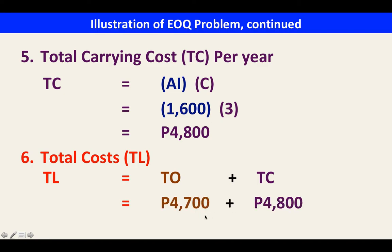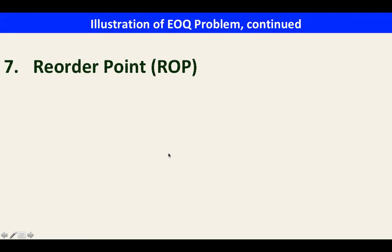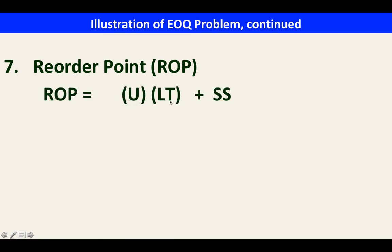The total cost is the sum of total ordering cost and total carrying cost: 4,700 + 4,800 = 9,500.